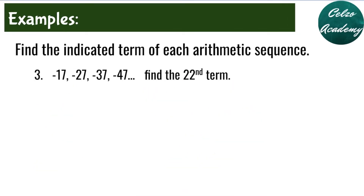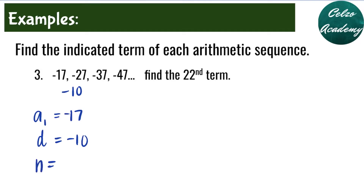Question number 3: given the arithmetic sequence negative 17, negative 27, negative 37, negative 47 and so on, find the 22nd term. Our a sub 1 is negative 17. The common difference is negative 10 because the pattern is subtracting by 10 to get the next term. You can verify this by subtracting negative 27 minus negative 17, or negative 37 minus negative 27. Our n value is 22 because we were asked to find the 22nd term.